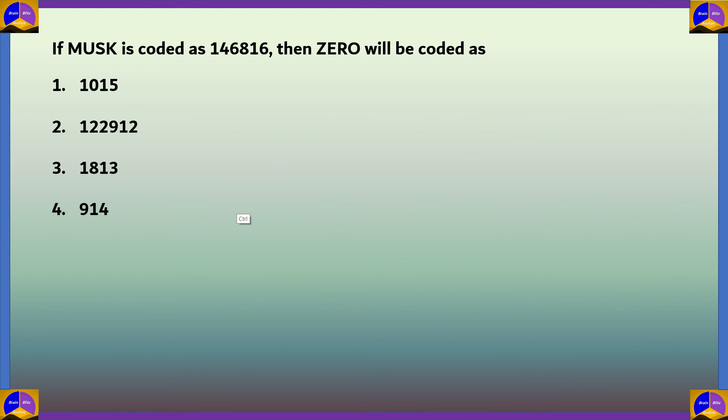Let's look at the last question of this episode. If MUSK is coded as 146816, then ZERO will be coded as 1 is 1015, 2 is 122912, 3 is 1813, and option 4 is 914.